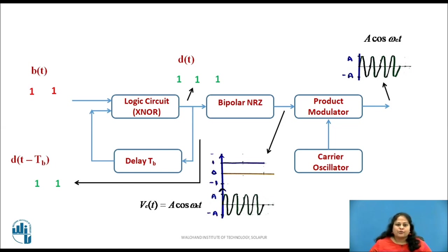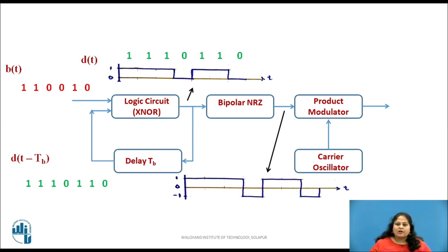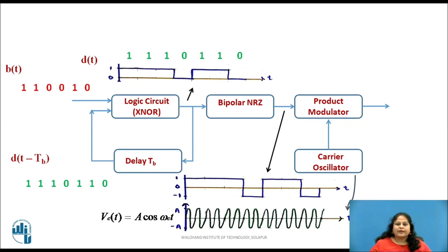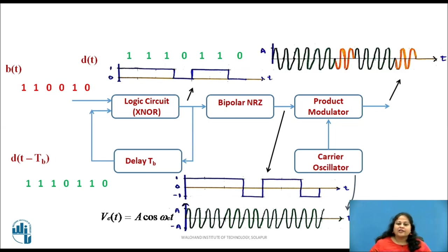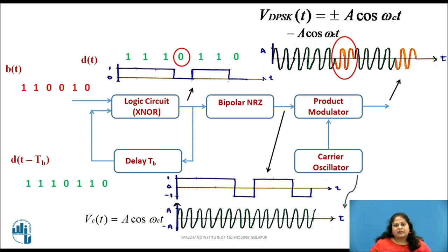After XNORing, this produces the next encoded bit to be transmitted. This bit is again passed to the product modulator through bipolar NRZ, which on multiplying with the carrier produces the next signal for transmission. This bit is again delayed by 1 bit duration and XNORed with the next incoming input bit to generate the next encoded bit, and this process continues. Thus, for a given input bit stream B(t), the encoded bit stream D(t) is obtained in unipolar NRZ format. This is then converted to bipolar NRZ form and applied to the product modulator, where it gets multiplied by the carrier signal A cos(ωc·t) to generate the final modulated signal. Thus, the encoded bit 1 is transmitted as A cos(ωc·t), and encoded bit 0 is 180 degrees phase shifted with respect to the carrier. Thus, V_DPSK(t) equals plus or minus A cos(ωc·t).